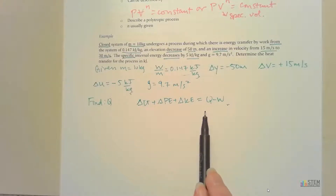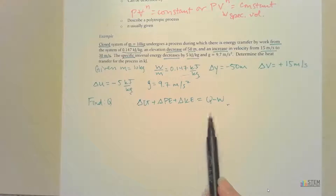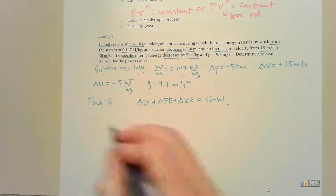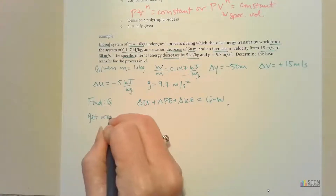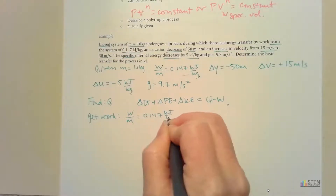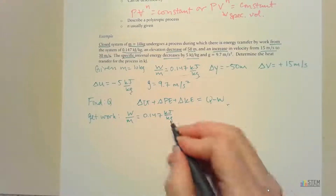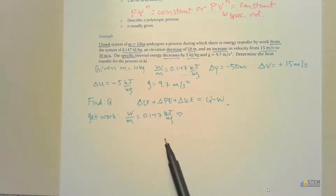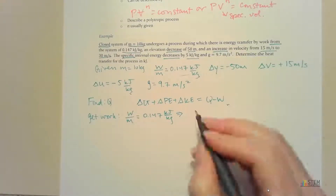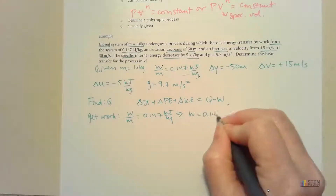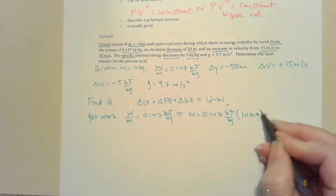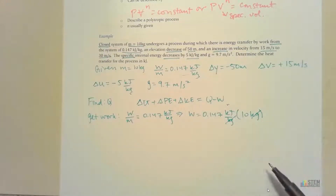In our equation we've got work, not work per mass — just work. So we need to convert. We know W over M equals 0.147 kilojoules per kilogram, but we want to get rid of the mass term. We multiply 0.147 by the actual mass of 10 kilograms: 0.147 kilojoules per kilogram times 10 kilograms. Check the units — the kilograms cancel and you're left with kilojoules. That's what we want.